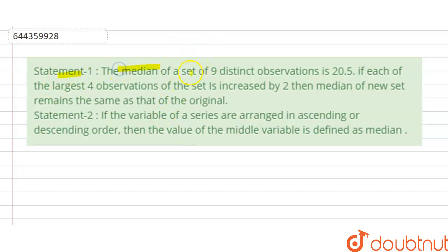Statement 1: The median of a set of 9 distinct observations is 20.5. If each of the largest 4 observations of the set is increased by 2, then the median of the new set remains the same as that of the original. Statement 2: If the variables of a series are arranged in ascending or descending order, then the value of the middle variable is defined as median.